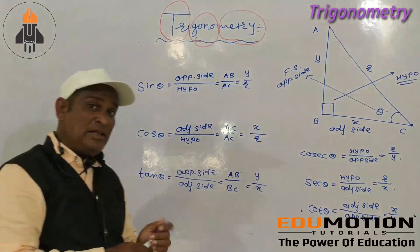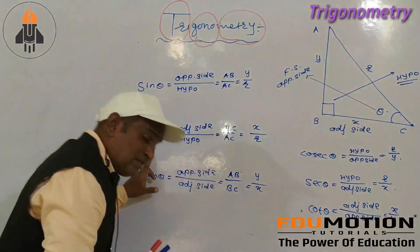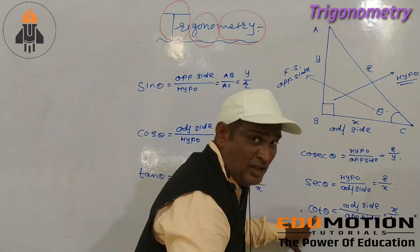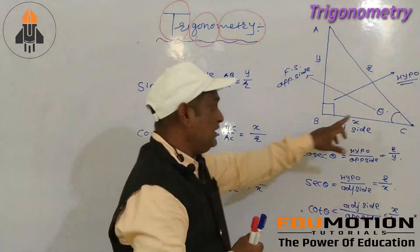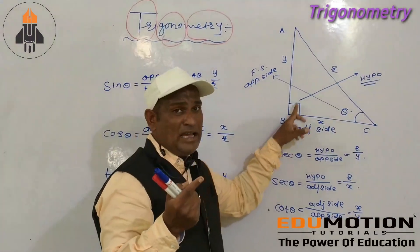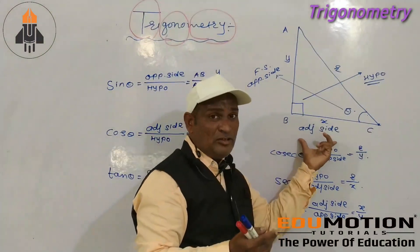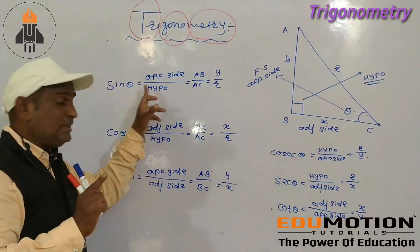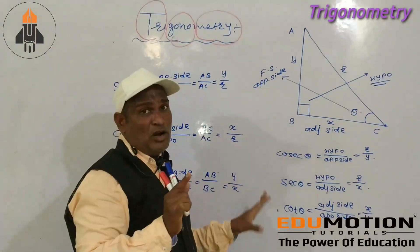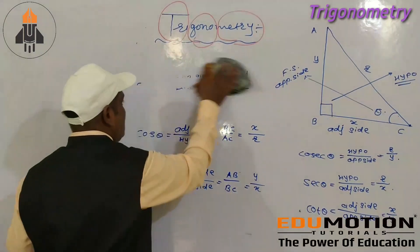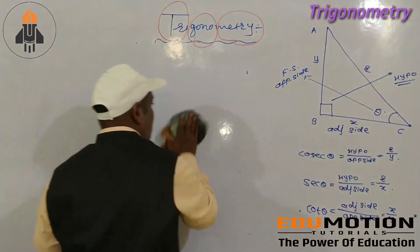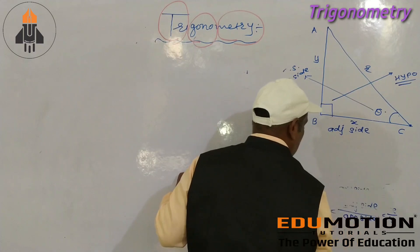There are six trigonometric ratios: first is sin theta, second is cos theta, third is tan theta, next is cosec theta, next is sec theta, and next is cot theta.